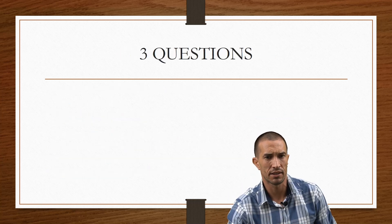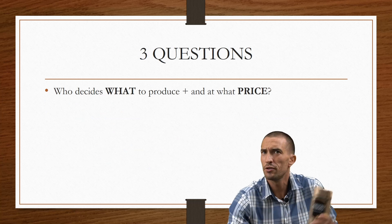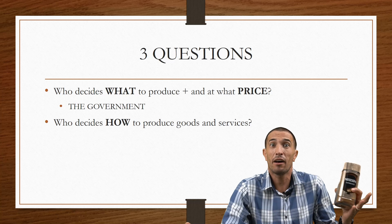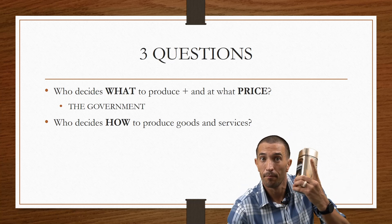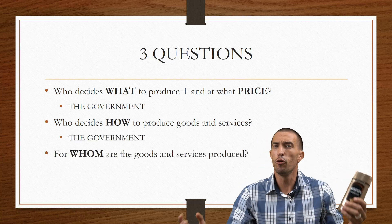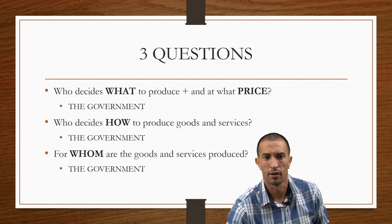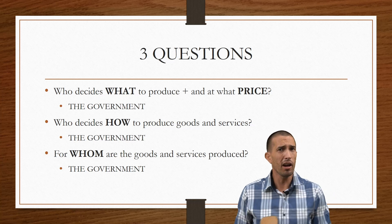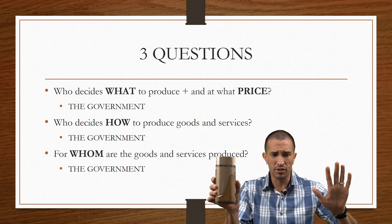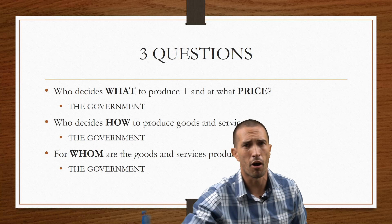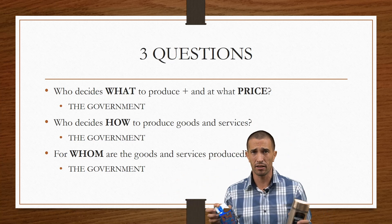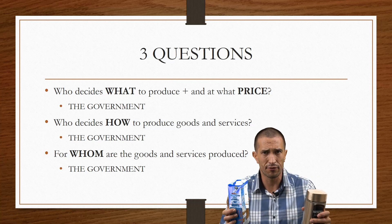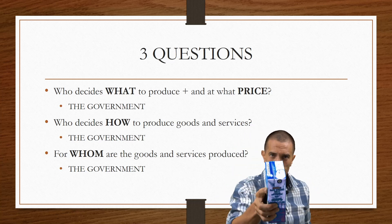Some examples of planned economic systems are Russia, Cuba, and North Korea. In essence, the three key questions: Who decides what to produce and at what price? The government. Who decides how to produce it? The government. For whom are goods and services produced? For the government — who then distributes them to the people. Make sure you understand the difference between the market economy and the planned economy, revise this video, and shift your learning.